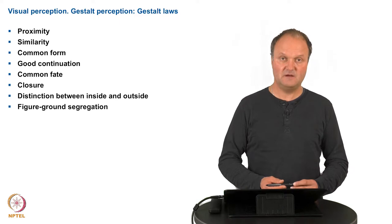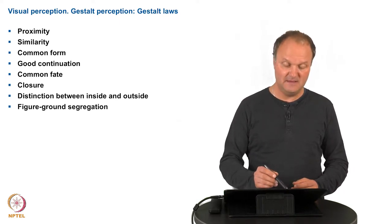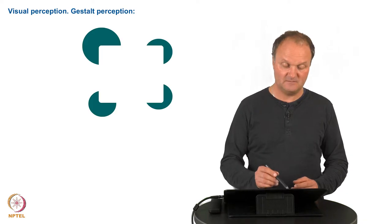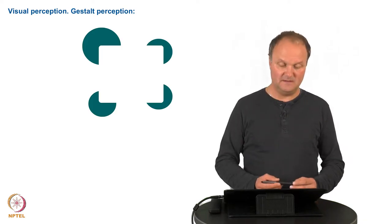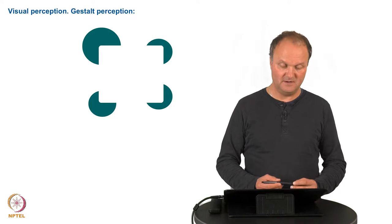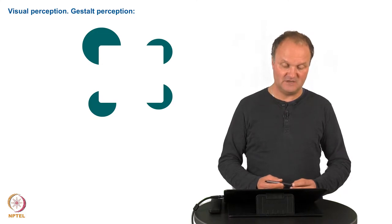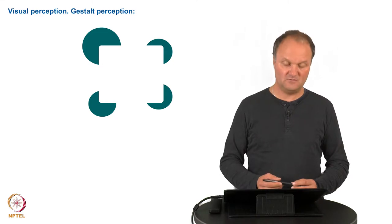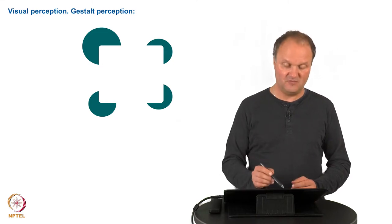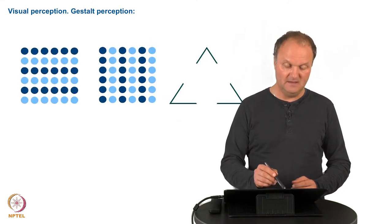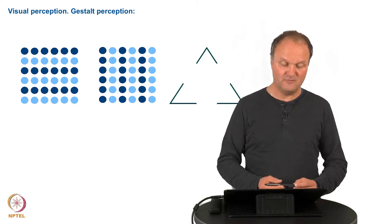You see that these are a number of laws and I will show you visual examples of some of them in the following slides. Here you see an example of the closure principle—it seems that there is a rectangular shape which is just built by these four circles which have an opening at each side. And in order to continue this form, this leads to a rectangular shape. Here you see an example of the common form.